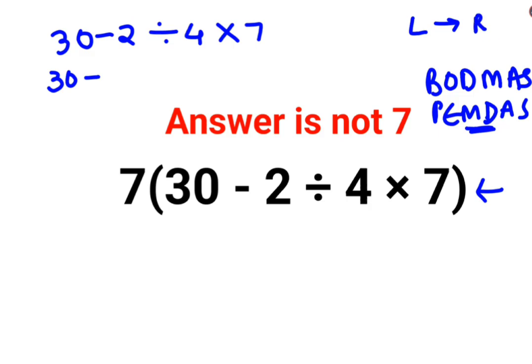So minus 2 divided by 4 is basically minus 1 by 2, multiplied by 7. So this becomes 30 minus 7 upon 2. This becomes your bracket and this is still getting multiplied by 7.